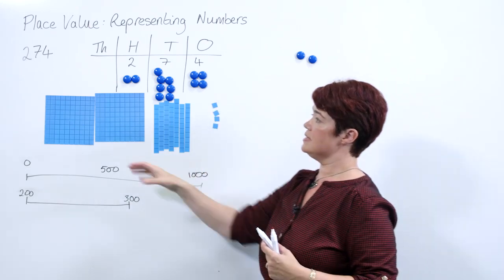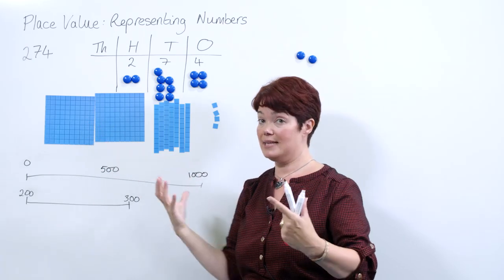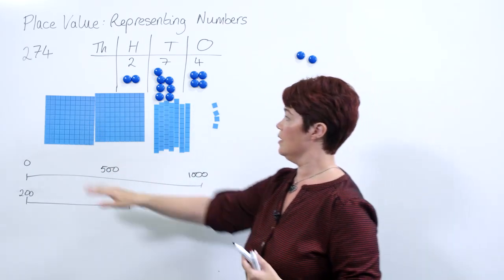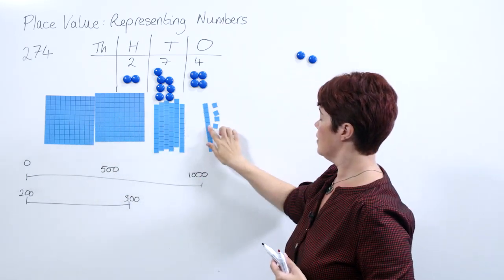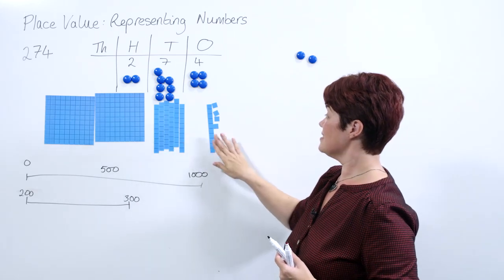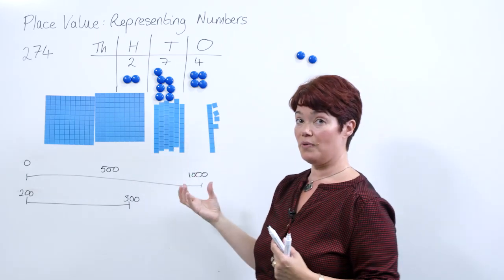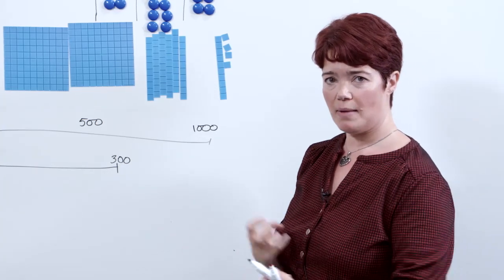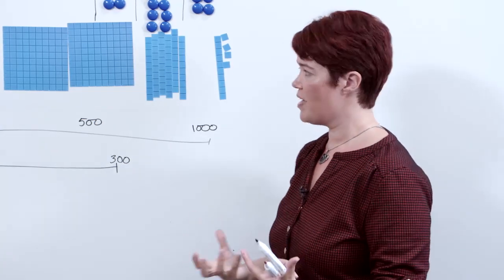And the great thing about this is we can manipulate this to write it in a different way or think of it in a different way. So it's 200 plus six tens plus 14 ones. This gives pupils a really good grasp of that place value in order to play around with it.